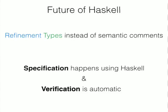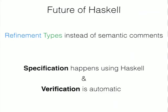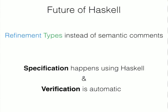This is how I see the future of refinement types in Haskell: using refinement types instead of comments to express all the semantic properties you want your code to have. Specification should happen inside the Haskell language, and verification should be automatic. Thanks.